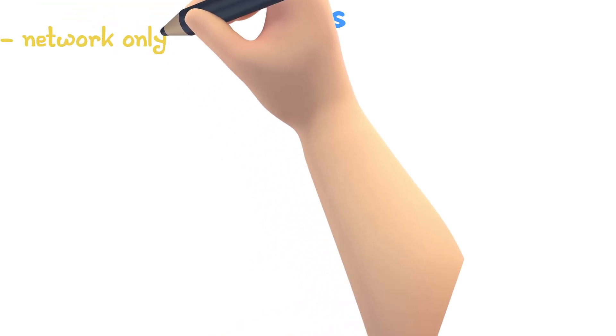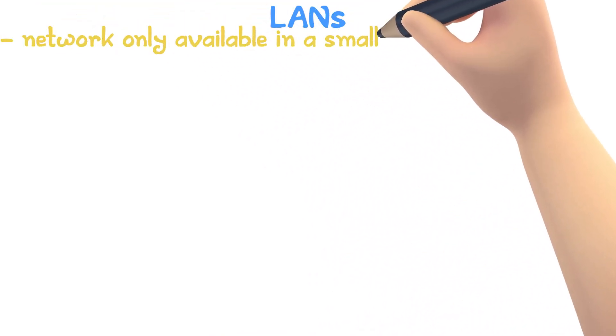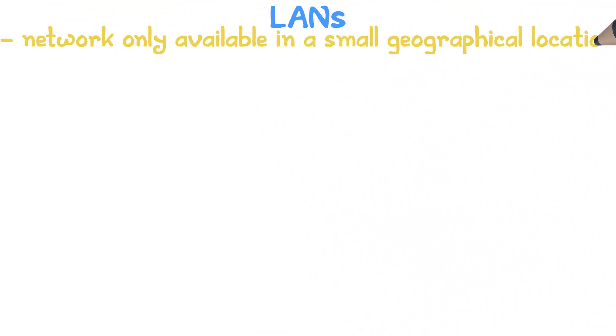We discussed different types of networks in the previous video. In this video, we will be focusing on a local area network. A LAN is only available in a small geographical area.